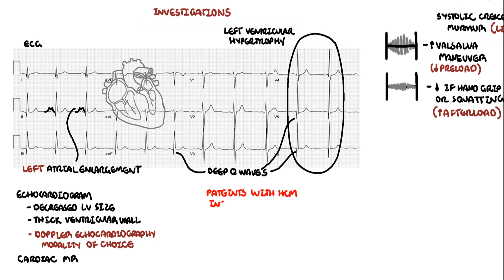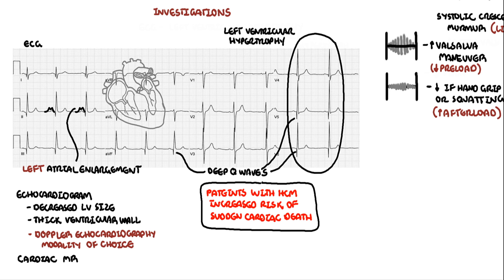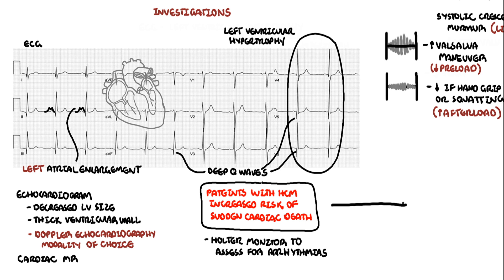Patients with hypertrophic cardiomyopathy are at increased risk of arrhythmias and sudden cardiac death — the most common cause of sudden cardiac death in athletes and teenagers. Because of this, all patients need a 24-hour Holter monitor to check for arrhythmias and a stress test to assess functional status and blood pressure response to exercise. All patients should undergo risk stratification for sudden cardiac death and be evaluated for placement of an implantable cardioverter defibrillator.